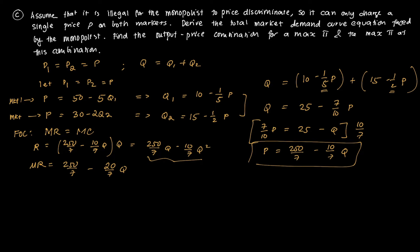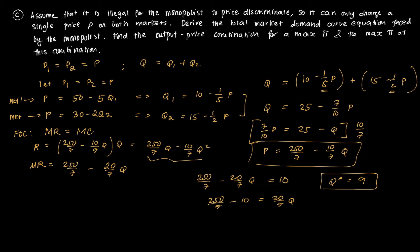Setting MR equal to MC of 10: 250 over 7 minus 20 over 7 times Q equals 10. Isolating Q gives 250 over 7 minus 10 equals 20 over 7 times Q, solving to Q star equal to 9. Substituting back into the demand function: P equals 250 over 7 minus 10 over 7 times 9, giving P star equal to approximately 22.86.